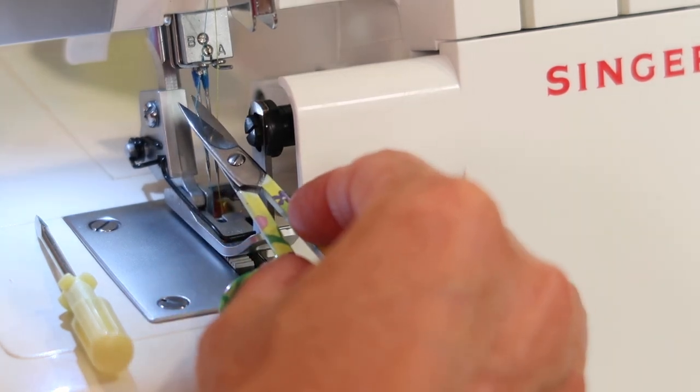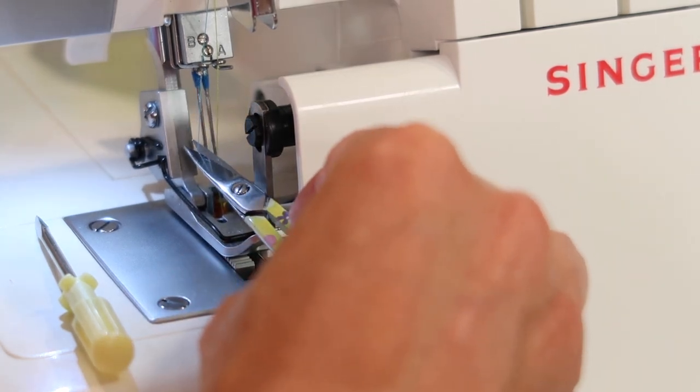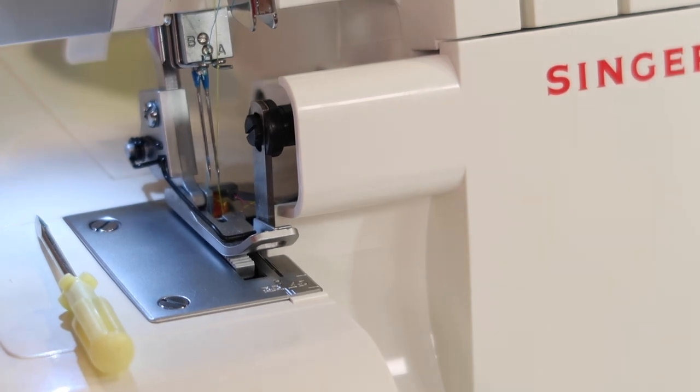start by just taking your scissors and clipping the thread near the needle. Go ahead and remove the thread and the spool completely from the machine.